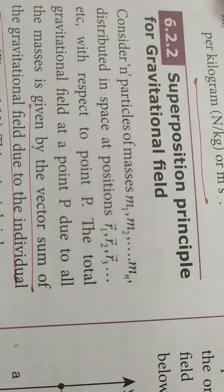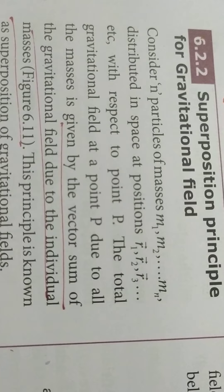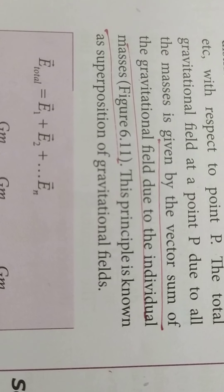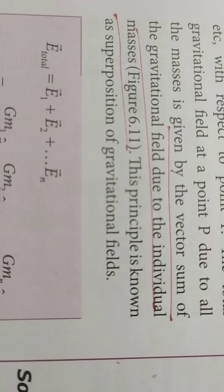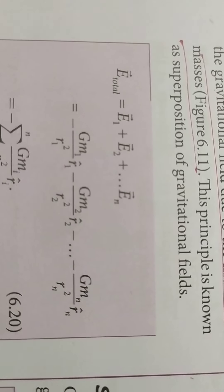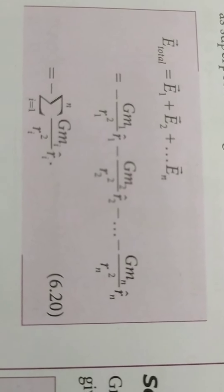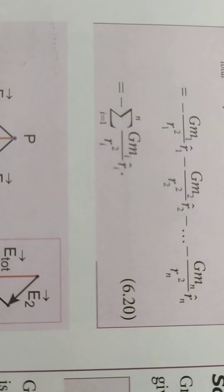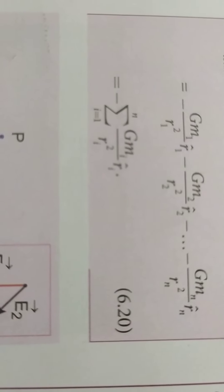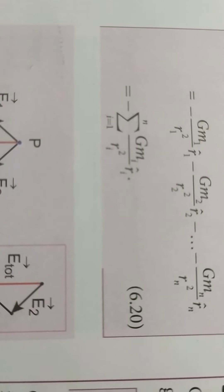Next, we are going to see about the superposition principle for gravitational field. Here we have masses M1, M2, M3 up to Mn, with n number of particles at distances R1, R2, R3 vectors. The resultant is given by the vector sum of gravitational fields due to individual masses. This principle is known as superposition of gravitational fields. E_total vector equals E1 + E2 + ... + En, which can be written as the sigma sum: minus G·Mi divided by Ri² into Ri-cap, where i goes from 1 to n. The negative sign is for attractive forces.